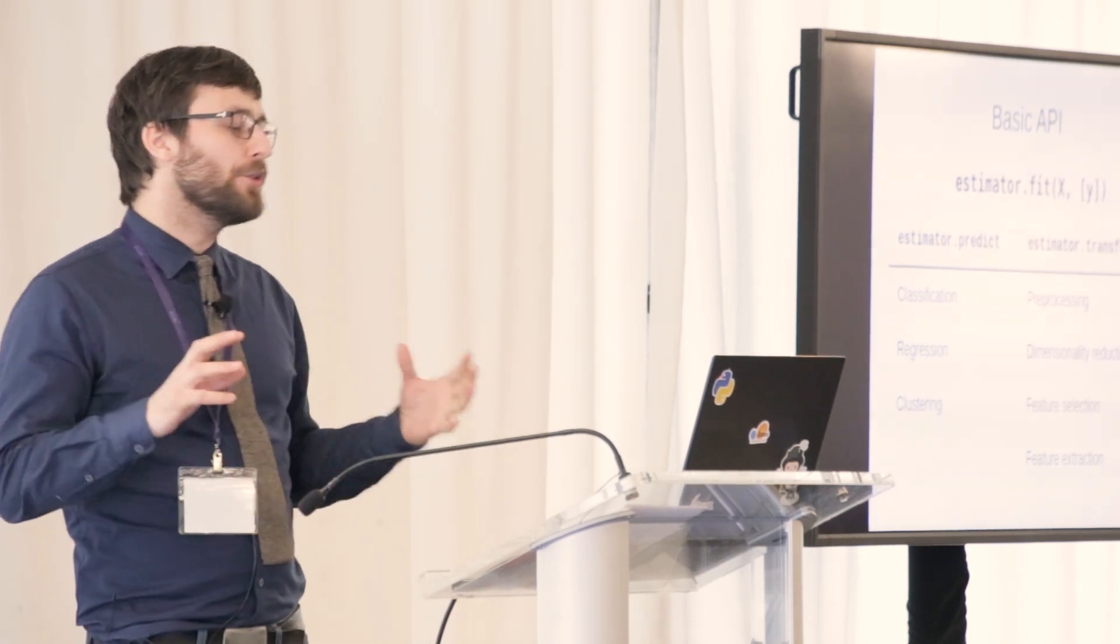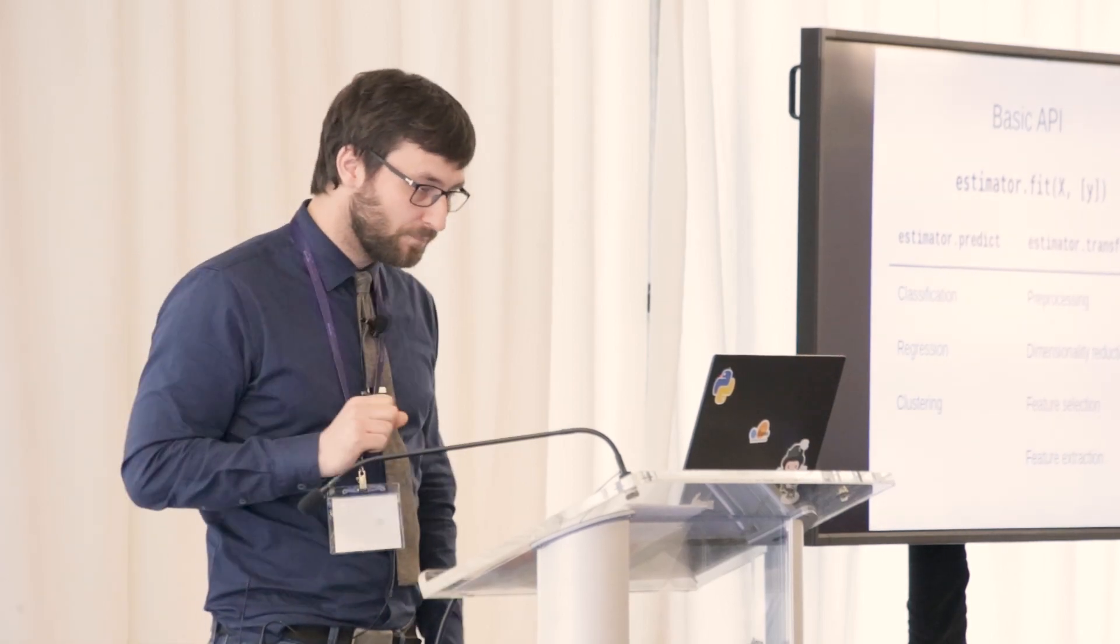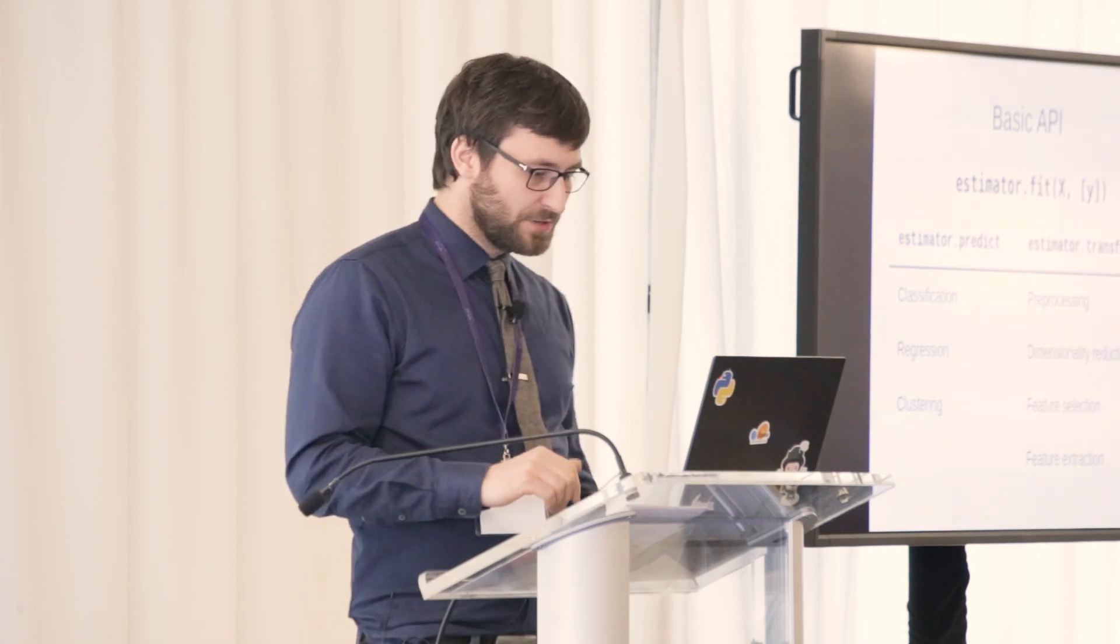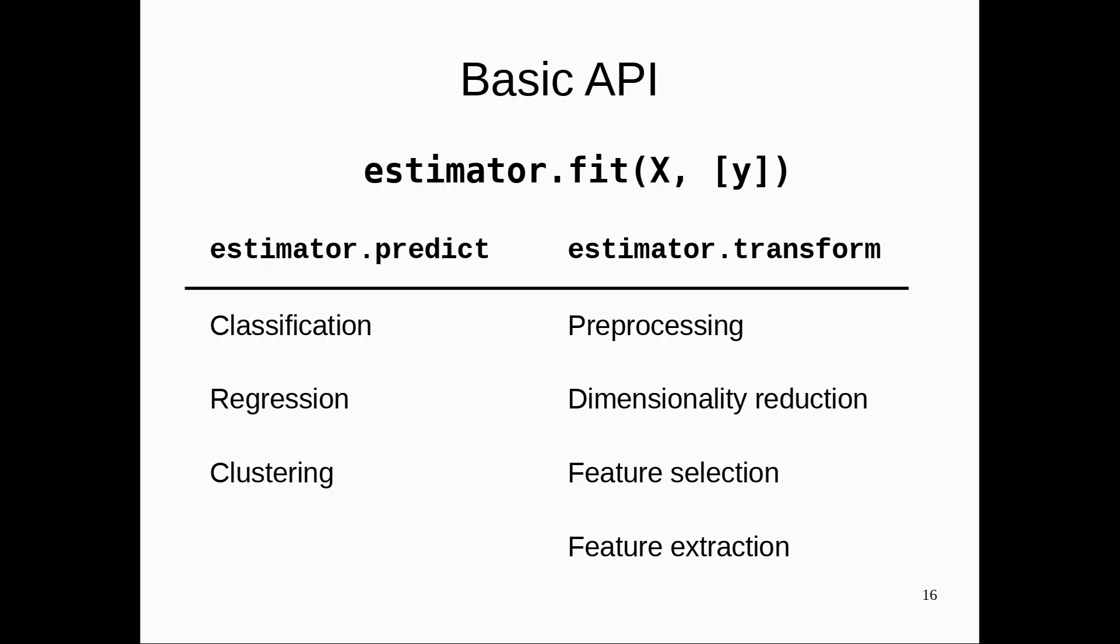And if you want to get a new view of the data, a new representation, a new X, you use the transform method, which is used for preprocessing, dimensionality reduction, feature selection, and feature extraction. So the two main building blocks are things to transform your data and things to make predictions. But we also have more building blocks for standard machine learning tasks, in particular for model evaluation and selection.